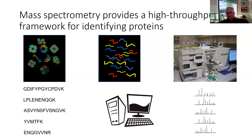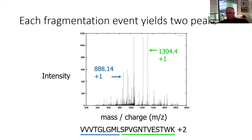Looking more closely at the data objects — the spectra themselves — the horizontal axis is the mass-to-charge ratio, where charge is usually one, two, or three. The y-axis is intensity, analogous to a count of how many fragments with that particular mass-to-charge ratio were observed. Ideally, each peak in the spectrum corresponds to one fragmentation event. For example, cleaving a peptide into a blue prefix and green suffix gives rise to corresponding peaks; in mass spec terminology, prefix ions are known as B ions and suffix ions as Y ions.